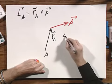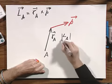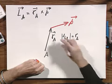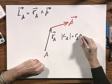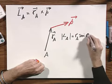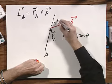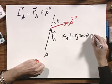Then the magnitude of the angular momentum relative to point A equals R A, that is the length of the vector, times the sine of theta, if theta is this angle, times P.